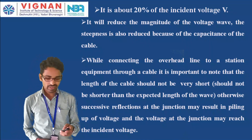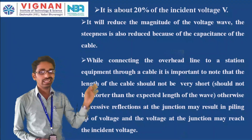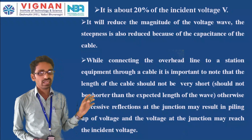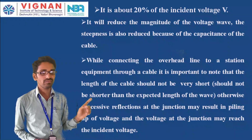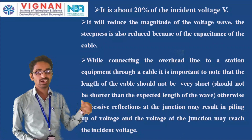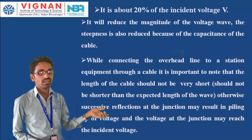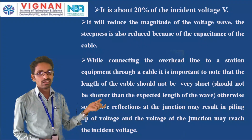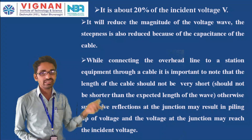While connecting an overhead line to station equipment through a cable, it is important that the length of the cable should not be very short — it should not be shorter than the expected length of the wave. If a very short cable is connected, successive reflections occur at the junction, which may result in piling up of voltage, and the voltage at the junction may reach the incident voltage level.